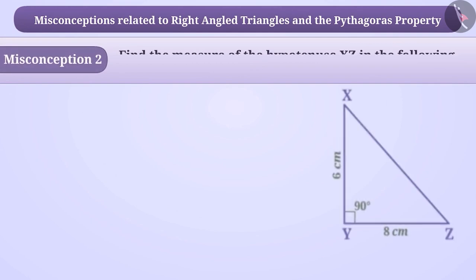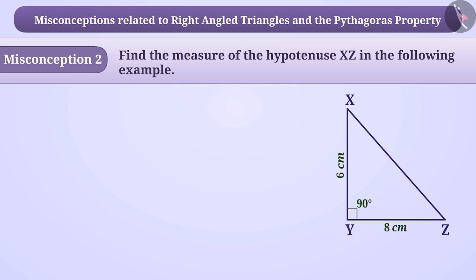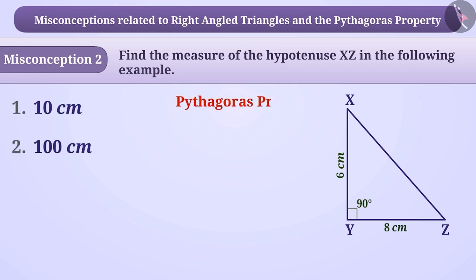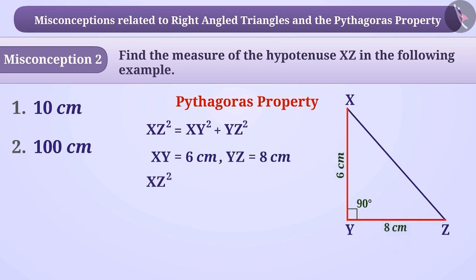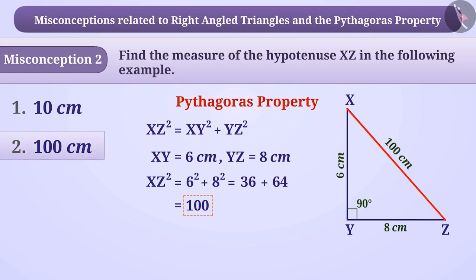Misconception 2: Find the measure of the hypotenuse XZ in the following example. Some children simplified using the Pythagoras property. After getting this sum, they forget to find the value of XZ from XZ square. They assume the value of XZ to be 100 centimetres. With this understanding, they give the answer as option 2, which is an incorrect answer.